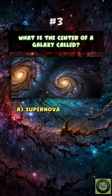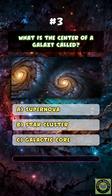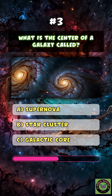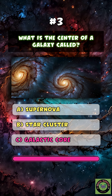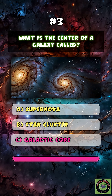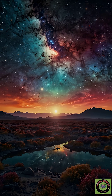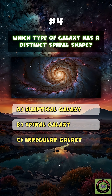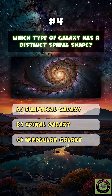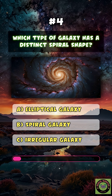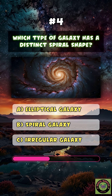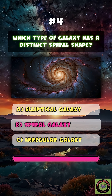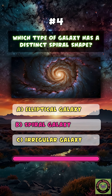What is the center of a galaxy called? C. Galactic core. Which type of galaxy has a distinct spiral shape? B. Spiral galaxy.